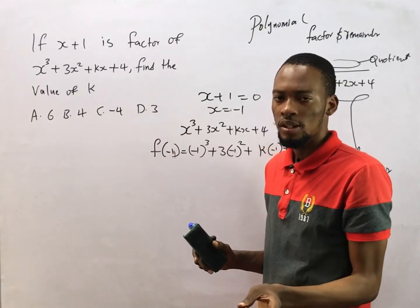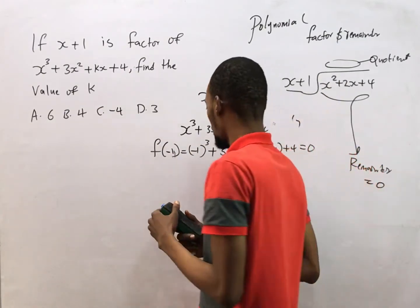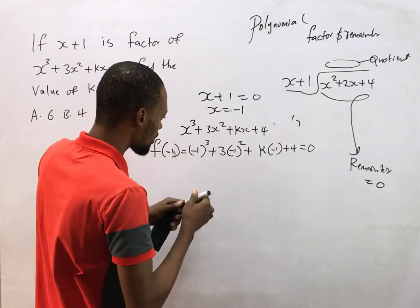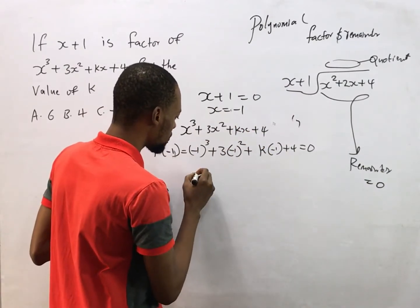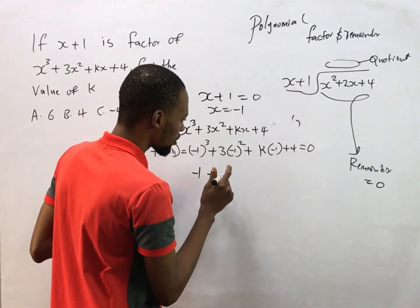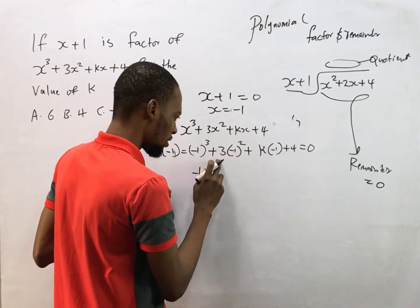These types of questions are very popular. Now we have this: minus 1 raised to the power of 3 is minus 1, minus 1 squared is 1, 1 times 3 is 3, minus k plus 4 equals zero. Minus 1 plus 3 is 2.